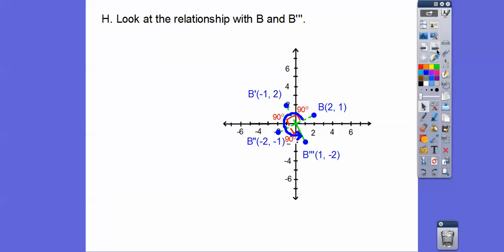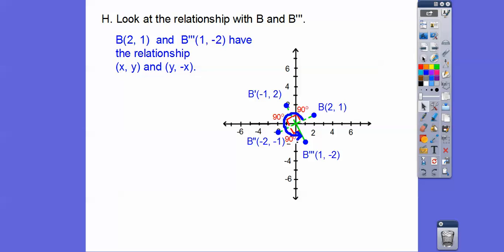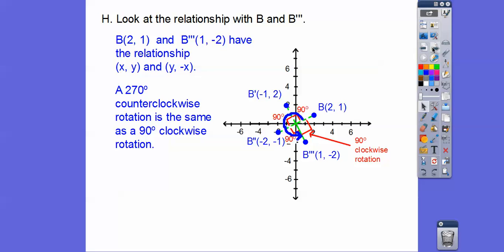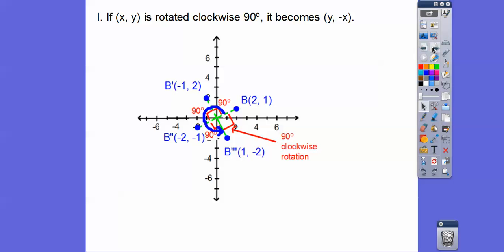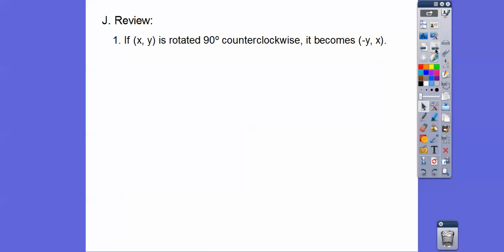270 degrees counterclockwise is the same as 90 degrees clockwise. So when we rotated (2, 1) 270 degrees, it became (1, -2). They have the relationship of flipping them and changing the x sign. A 270 degrees counterclockwise rotation is the same as a 90 degrees clockwise rotation. So if we take (x, y) and rotate it 90 degrees clockwise, it becomes (y, -x).